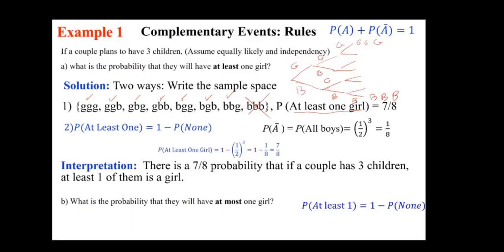Therefore, there is a probability of 7 out of 8 that if a couple has three children, at least one of them is a girl. Now the next part is asking, what is the probability that they will have at most one girl? In which case, at most means if we have one girl is fine, and if we have no girl is fine. That's why a shorthand notation is P(0) and P(1).